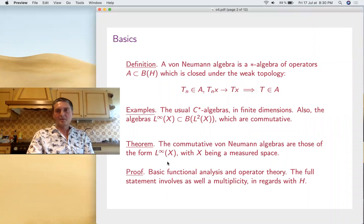The Von Neumann Algebras are *-algebras of operators which are closed under the weak topology, meaning point-wise convergence. As examples, these are the same as *-algebras in finite dimensions. And also importantly, L^∞(X) acting by multiplication on L²(X) for any measured space X. And actually, the commutative Von Neumann Algebras are exactly these L^∞(X)'s.